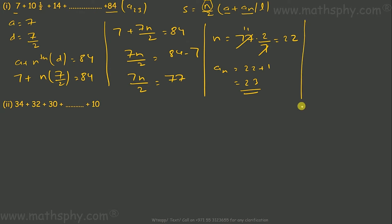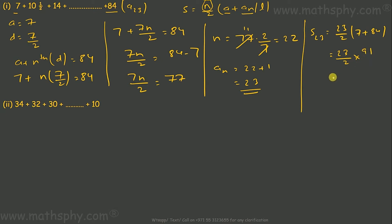That gives n = 22, meaning the term index is 22 + 1 = 23. So 84 is the 23rd term, meaning this series has 23 terms. Now the sum is 23/2 × (a + last term) = 23/2 × (7 + 84) = 23/2 × 91, which equals 2093/2 or 1046.5. The sum of the 23 terms in this progression is 1046.5.